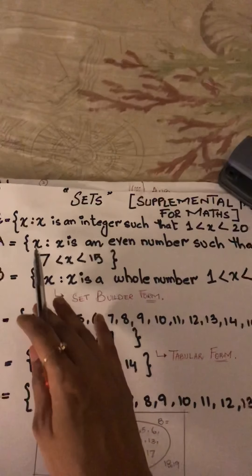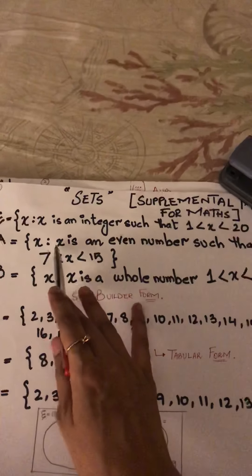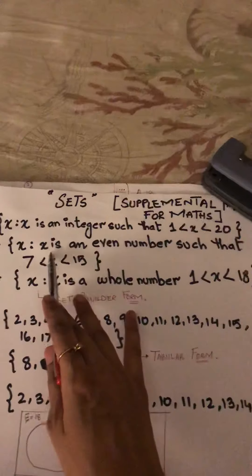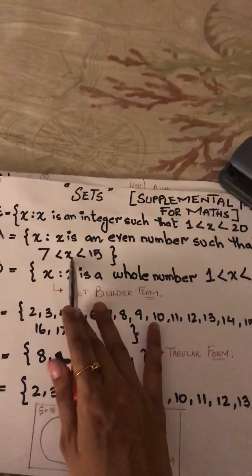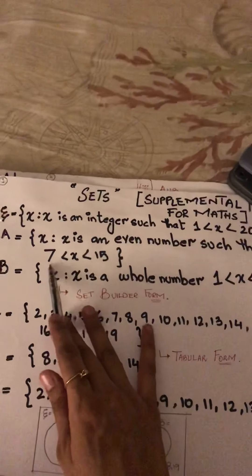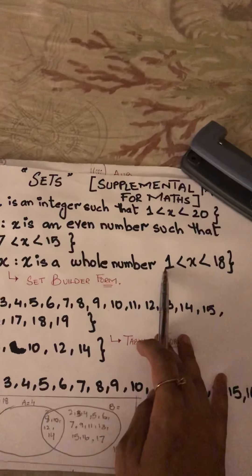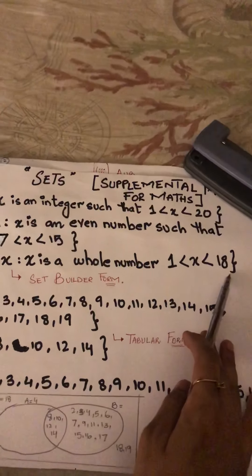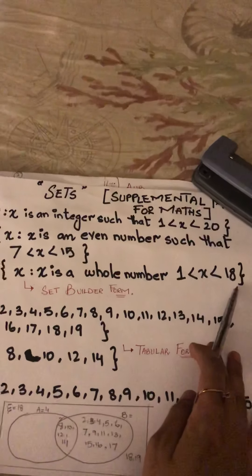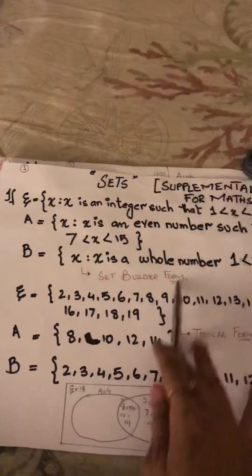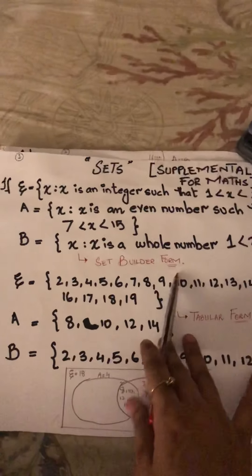Set A: X is such that X is an even number, greater than 7 but lesser than 15. Set B: X is such that X is a whole number, greater than 1 but lesser than 18. That is the set builder form and this is how we read it.